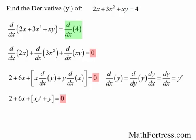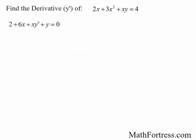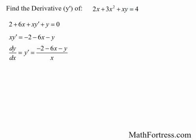So we have the following expression, and the next step after we take derivatives is to solve for y prime. At this point, it becomes a standard algebra problem where we solve for y prime. Subtracting 2, 6x, and y to the other side, and then dividing by x, we have the final derivative: dy/dx is going to be equal to the negative of 2 plus 6x plus y, all over x. Once again, the derivative is expressed in terms of y and x.